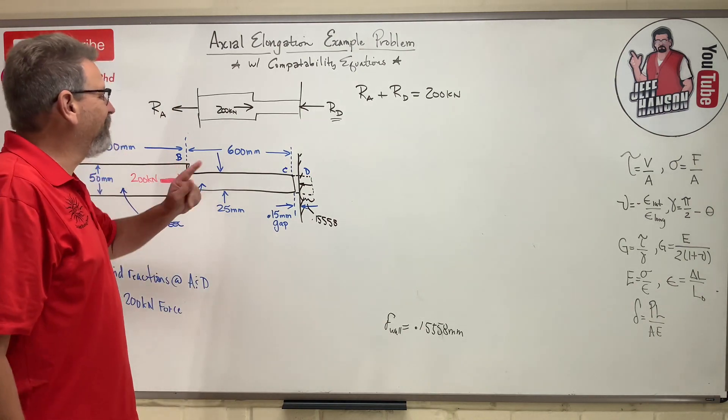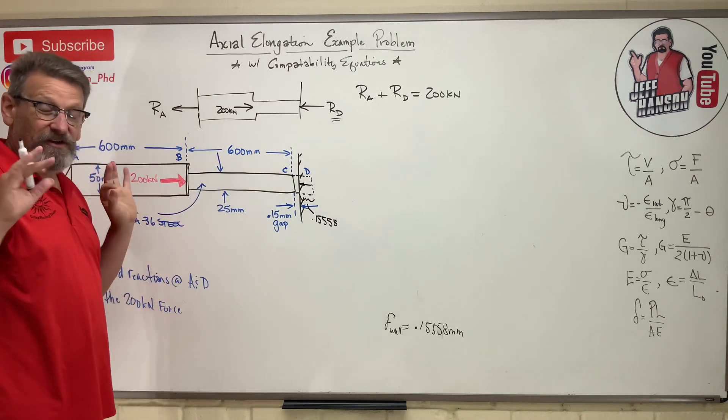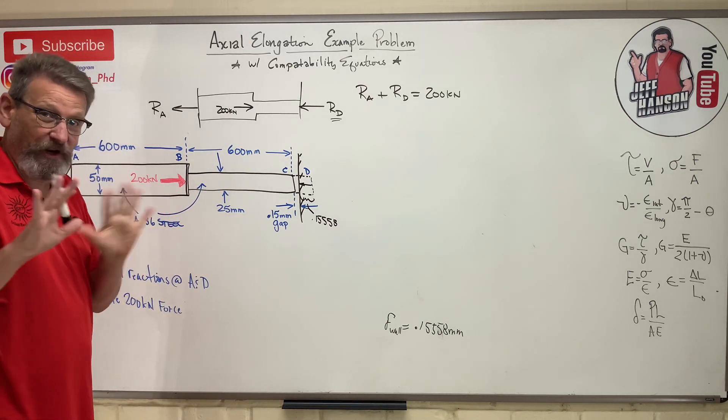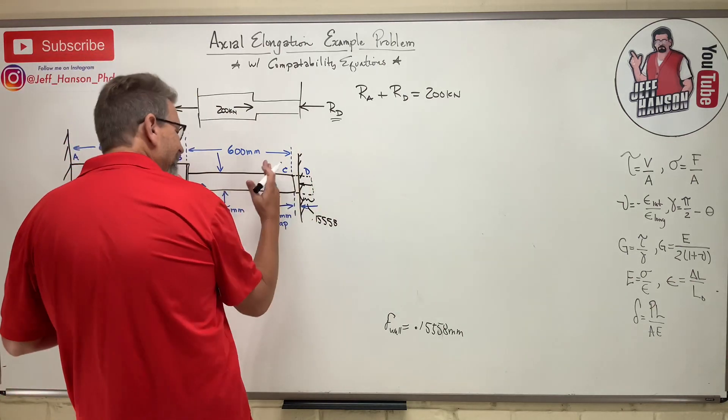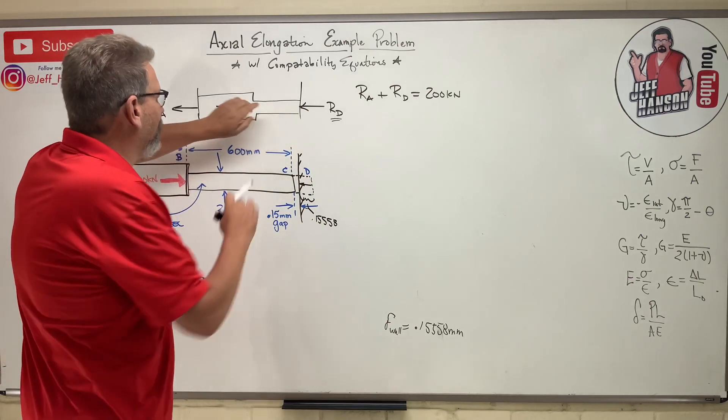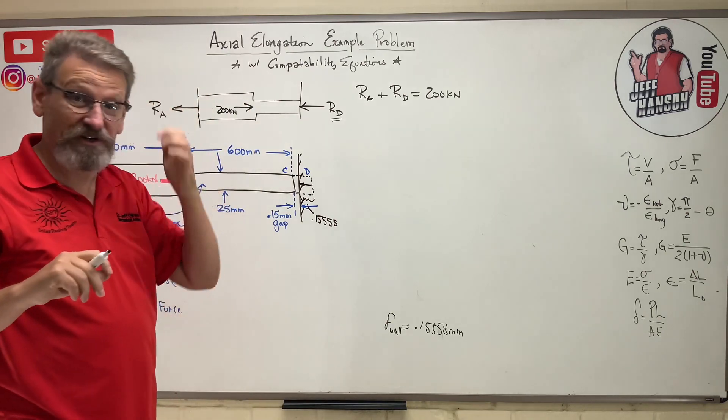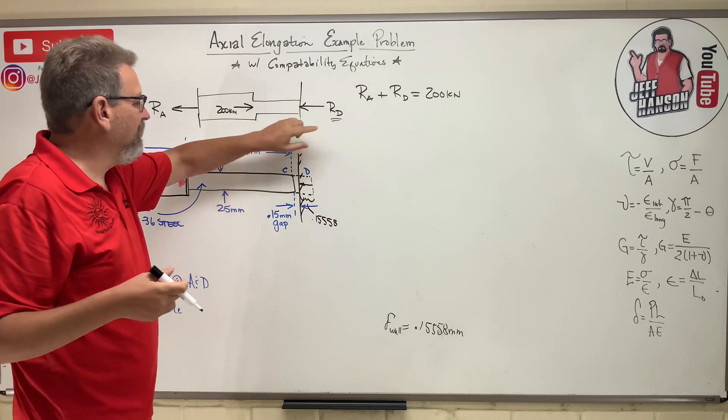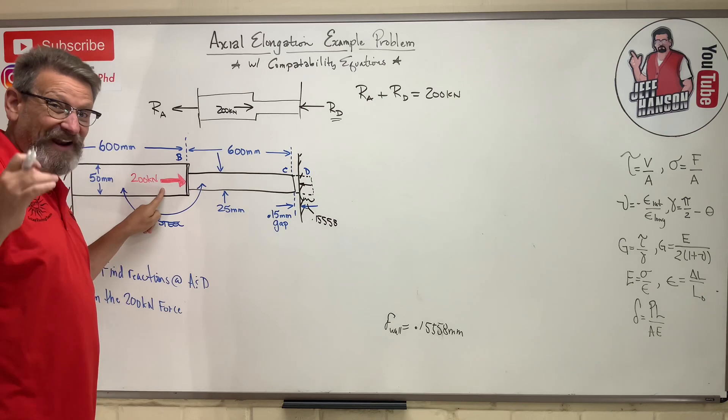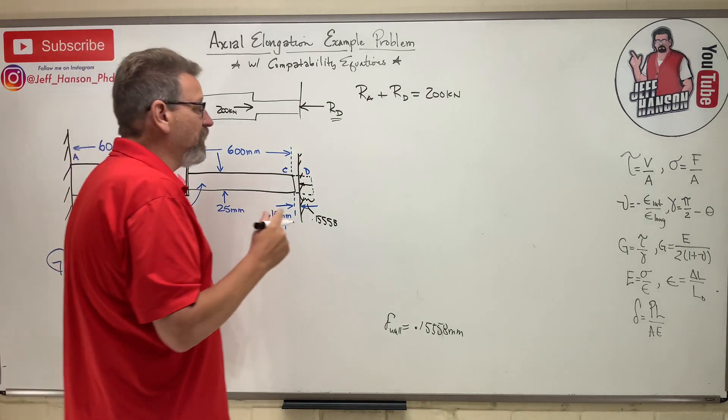So the next thing we've got to think about is we've got this thing stretched, right? The 200 kilonewtons made us expand. So we have taken into account the effect from the 200 kilonewtons. So we're going to ignore him now. Now we're going to compress it back into shape. Who's going to compress it back into shape? Rd. So what's the force in this section here? Rd. What's the force in this section over here? Rd, right? So this guy here is going to be compressing it back into shape. We have to ignore this because we've already taken into account the effect from this guy.